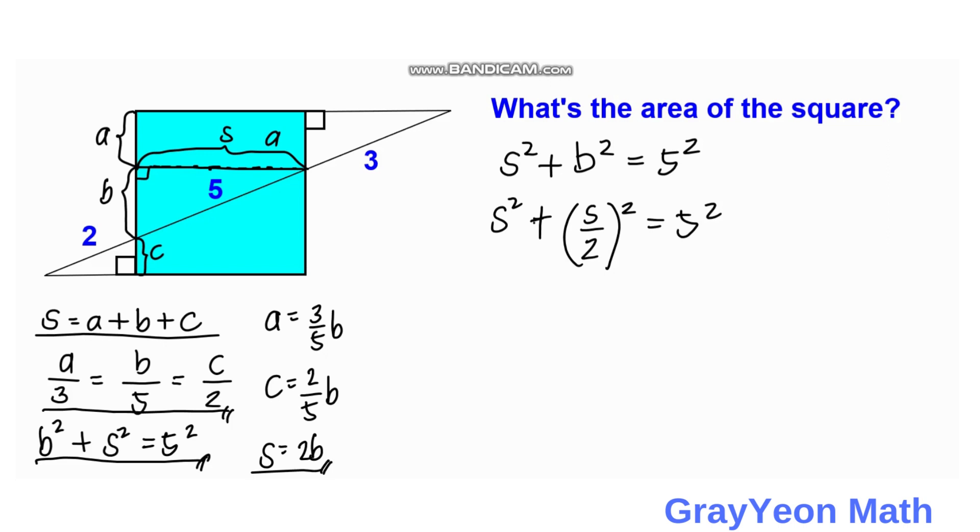So we can actually simplify this by S squared plus S squared over four is equal to five squared. But actually we are looking only for S squared, which is the area of the square. So S squared, we can simply factor it out and we have one plus one-fourth is equal to five squared.